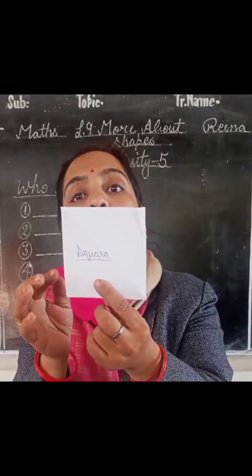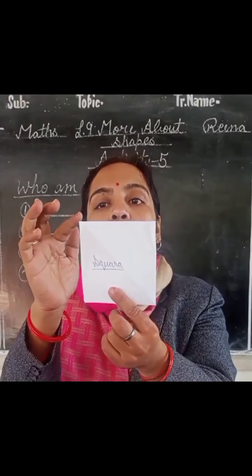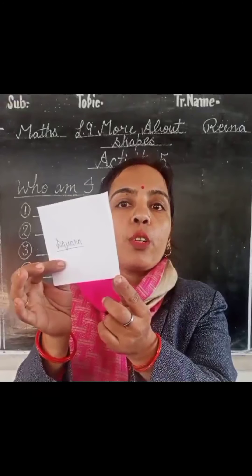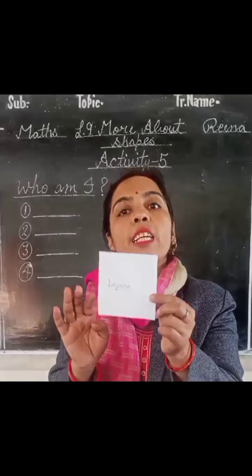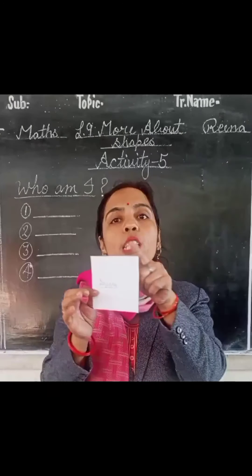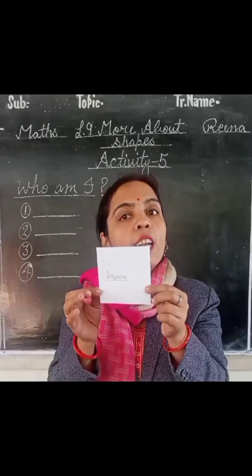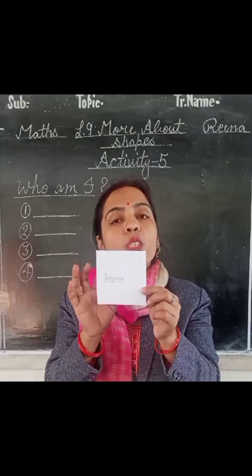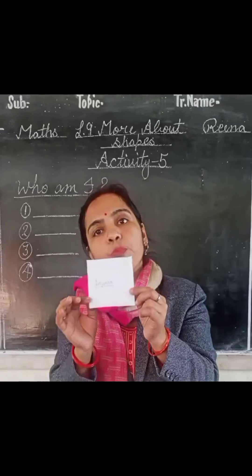And how many corners or vertices? 4 corners: 1, 2, 3 and 4 corners. So in a square we have 4 sides and 4 vertices. And all sides of the square are equal. In a square there are 4 equal sides and 4 corners. Is it clear?